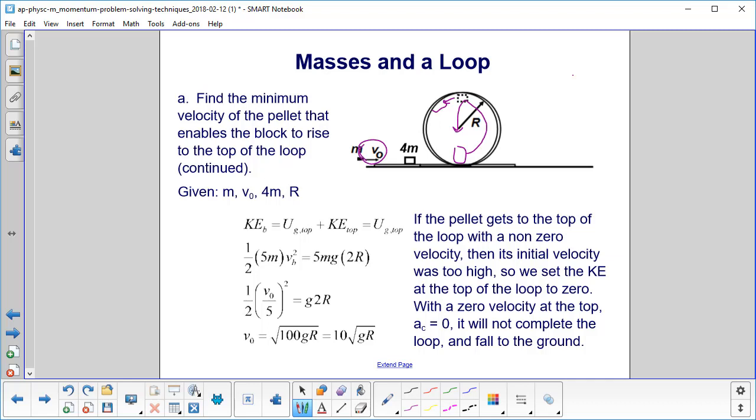So we start with our conservation of energy. At the bottom, we have the kinetic energy of the pellet block system. At the top, we have potential energy and kinetic energy, but we just said kinetic energy is zero. So it's just equal to the potential energy.